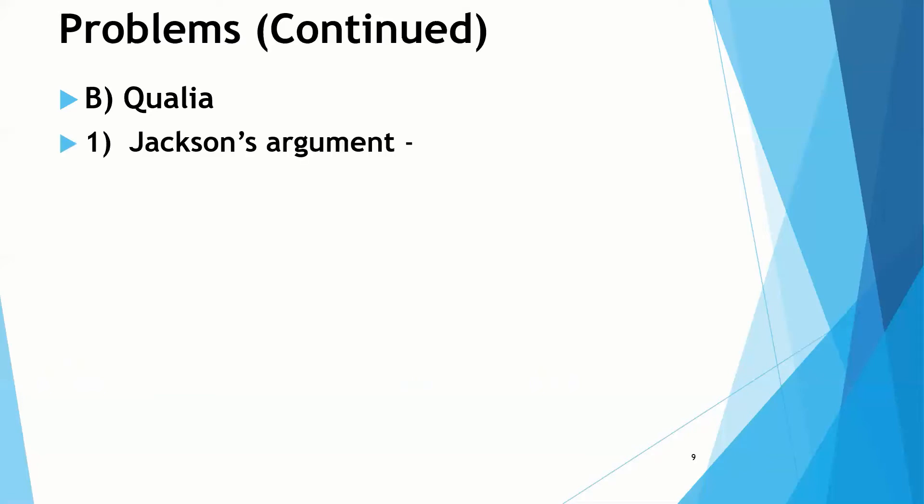We'll look at Jackson's argument. Frank Jackson has a famous argument that has to do with Mary, a color scientist. Mary is a very proficient color scientist. Mary knows every physical fact concerning color vision. She knows all the physiology, the biology of the brain, all about light, the physics, the refraction, what makes light wavelengths of one color different from another.